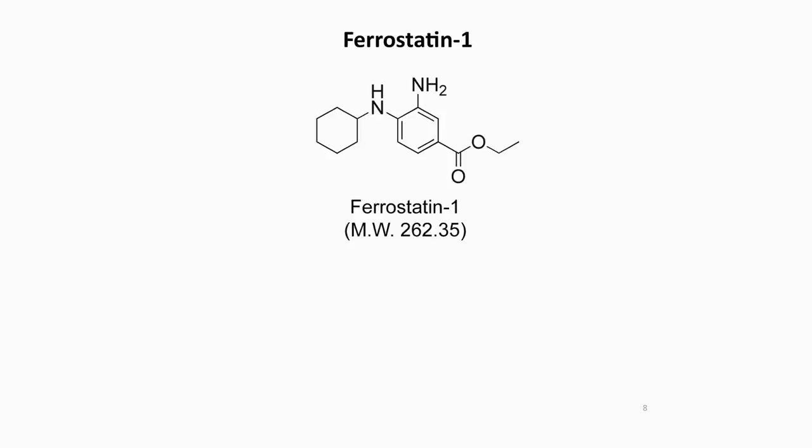It can be very useful when studying cell death to have a specific inhibitor of the process available. To identify a specific drug-like inhibitor of ferroptosis, we screened a custom library of 9,500 small organic molecules for compounds that would prevent Erastin-induced death but not cell death induced by other lethal agents. From this process, we identified one very potent and selective inhibitor that we named Ferrostatin-1.